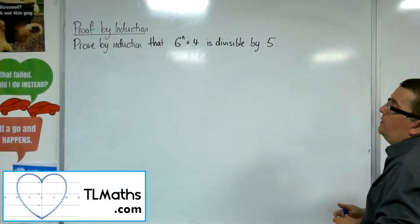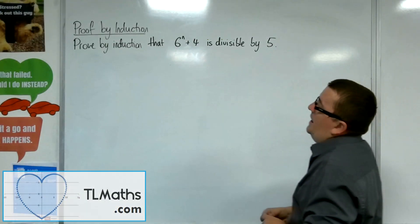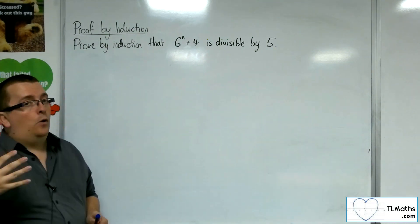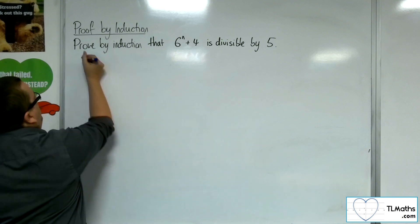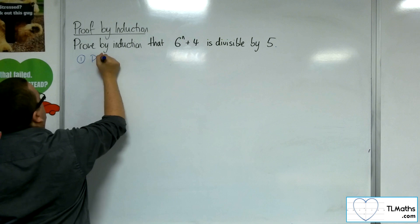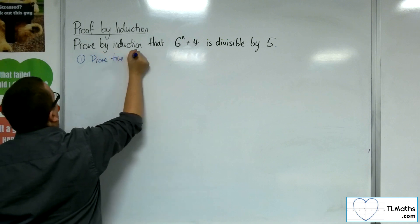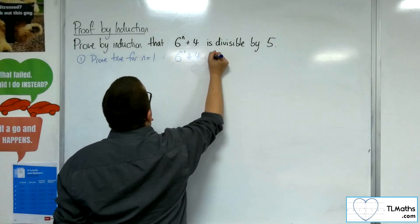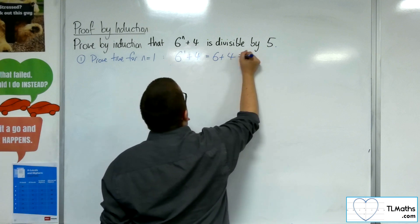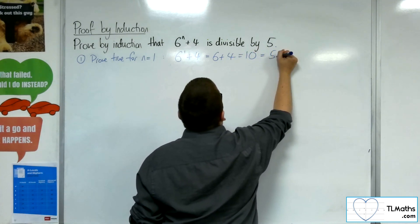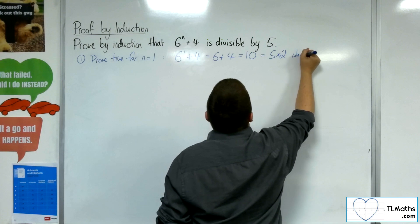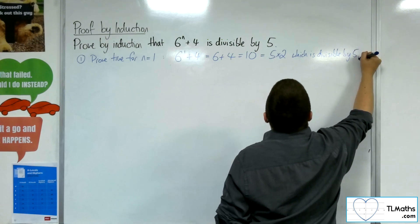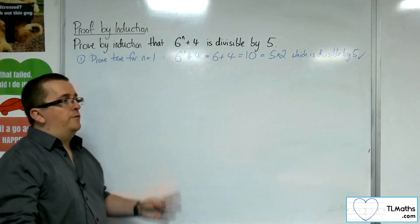In this video we're going to look at proving by induction that 6 to the n plus 4 is divisible by 5. We start with step 1: prove true for n equals 1. So we have 6 to the 1 plus 4, which is 6 plus 4, which is 10, which is 5 times 2 — so divisible by 5. The first statement is proven to be true.